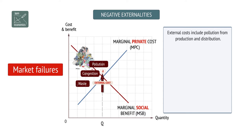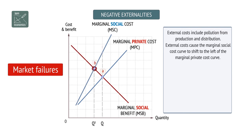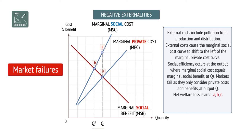Graphically, external costs cause the marginal social cost curve to shift to the left. Socially efficient production and consumption can occur at the output where marginal social cost equals marginal social benefit. Net welfare loss is area A, B, C.